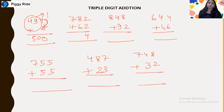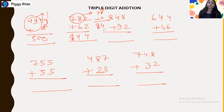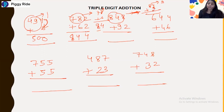For 782 plus 62: take 78 plus 6. Following the previous rule, 7 increases by 1 and the end number is 4, giving 84. So the answer is 844.